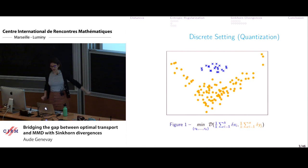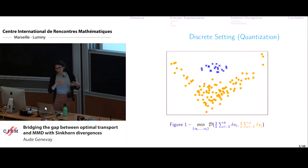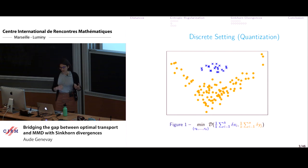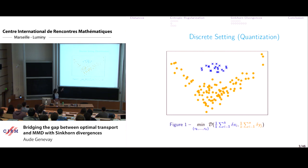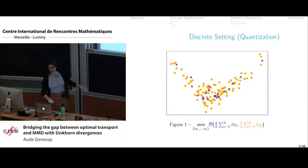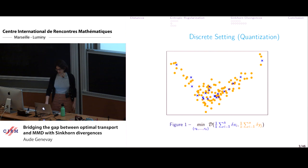Suppose you have a large point cloud represented in orange, and you want to summarize it with a smaller number of points. You want to minimize some notion of distance between the orange point cloud and the blue point cloud whose positions you can move. So you have a minimization problem over discrete measures, minimizing over the positions of the blue points to summarize your large dataset.